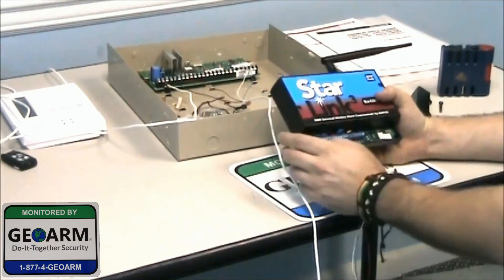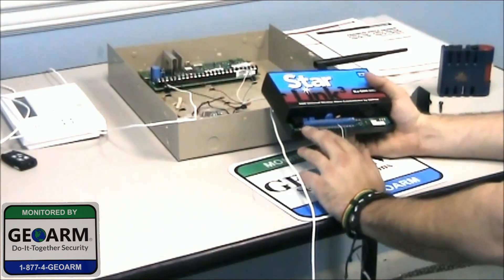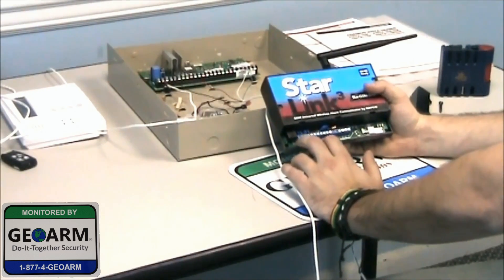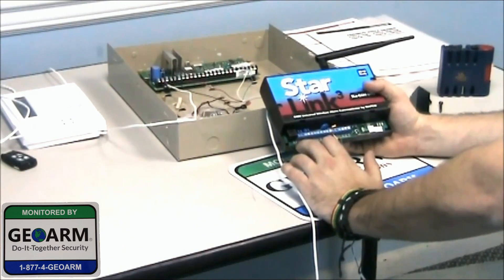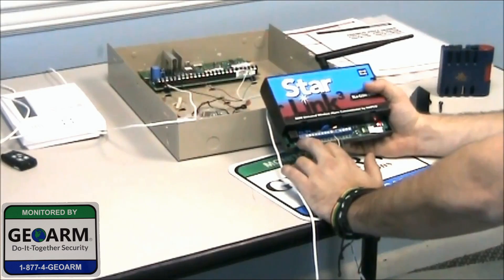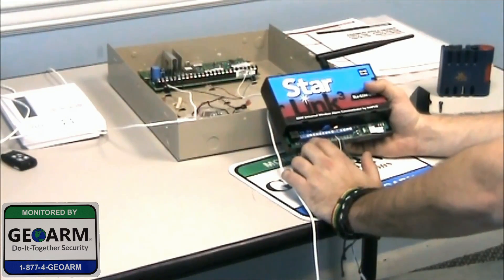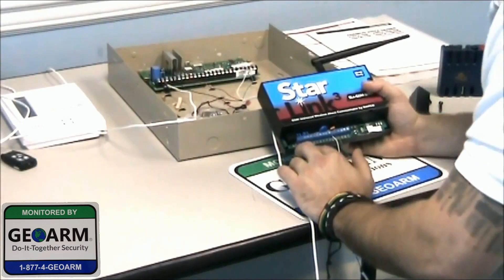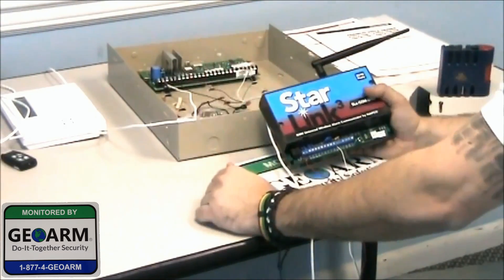But the wiring goes like this. Power plus and power minus are the first two terminals. We're going to go red, we usually use for positive. So we'll go red to power plus and then black to power minus. You're going to wire those into terminals 4 and 5 on the panel. Black is going to go to 4.